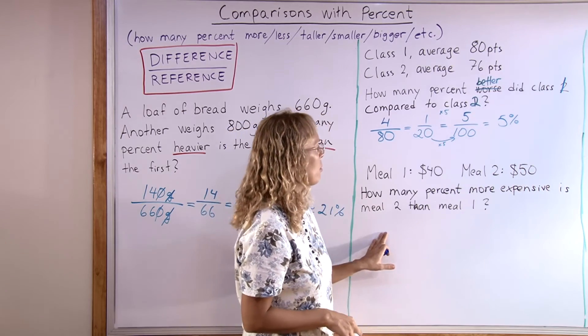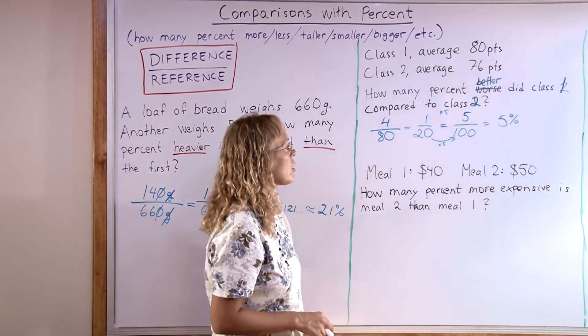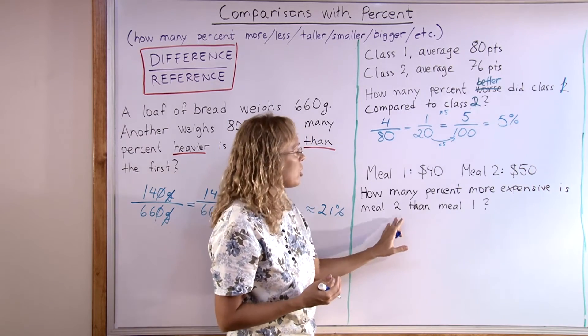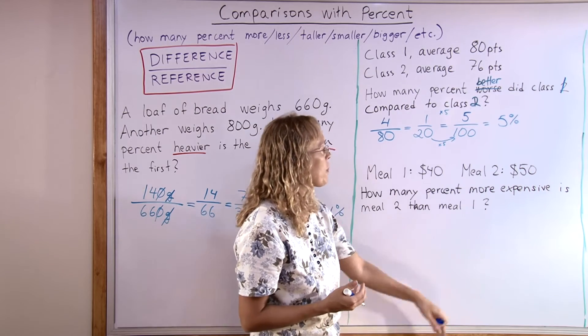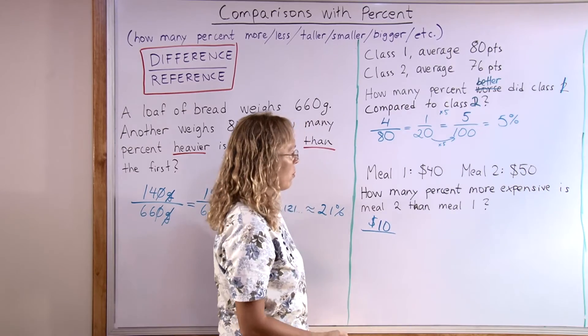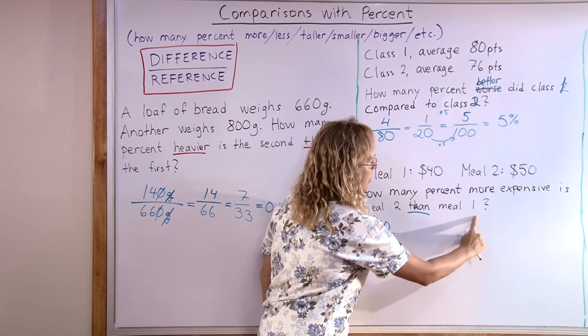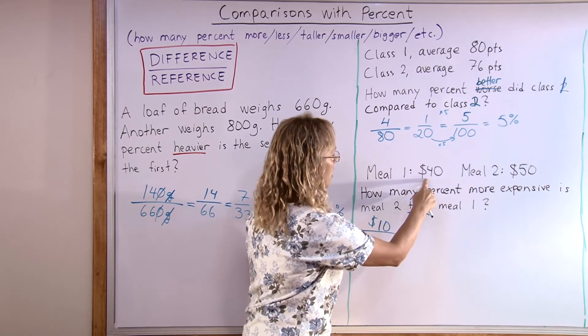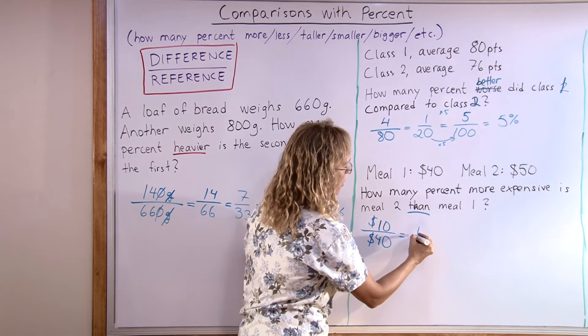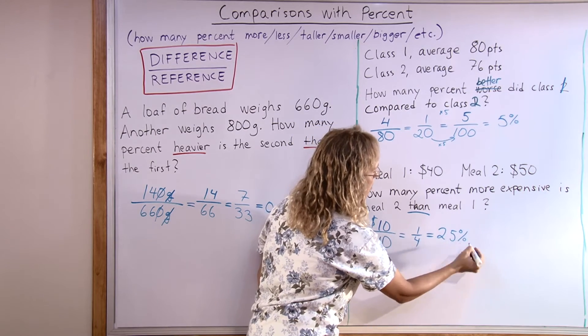In my last example, we have meal one, $40, and meal two, $50. Let's ask how many percent more expensive is meal two than meal one? Again, the difference is just $10. And we are comparing—after the word 'than' is meal one. We are comparing to meal one, $40. And this is of course the fraction 10 over 40, which is 1/4, or 25%. It's 25% more expensive.